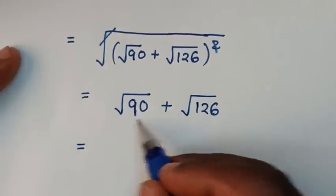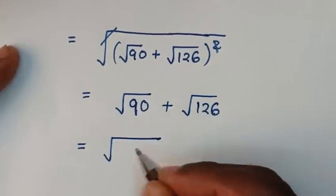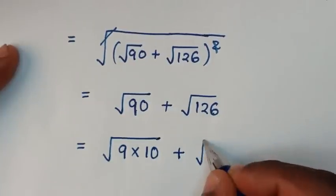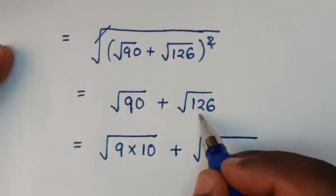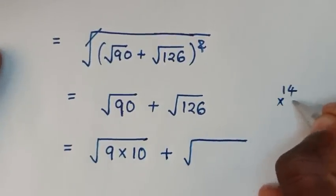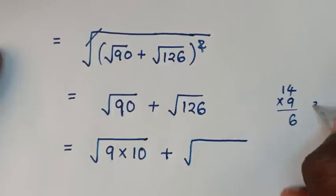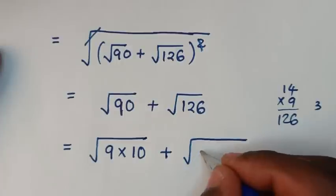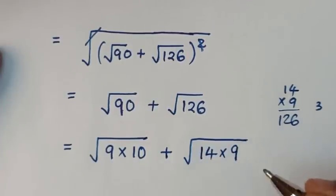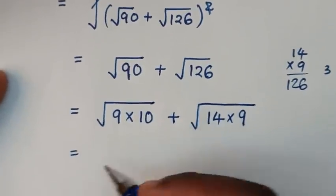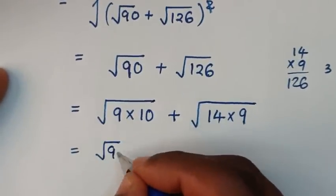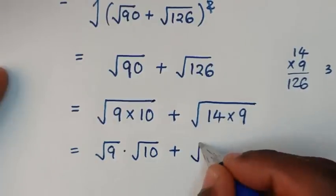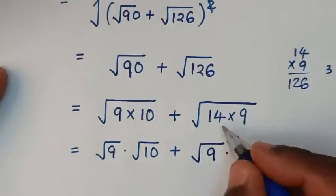Then it will be equal to — we can continue to simplify. Square root of 90 is the same as square root of 9 times 10, plus square root of 126 is the same as square root of 14 times 9. We separate these: square root of 9 times 10 is square root of 9 times square root of 10, and square root of 14 times 9 is square root of 9 times square root of 14.